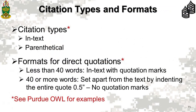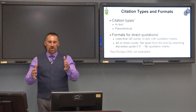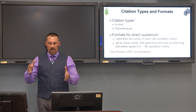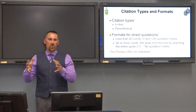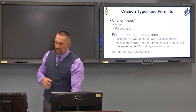Note that there are two types of citations: in-text citations and parenthetical citations. These are often confused with the formats for direct quotes. For direct quotes, there are two different formats. If the quotation is less than 40 words long, you place it in the body of your paper within the sentence with quotation marks around it. If it's 40 or more words, you drop it to its own paragraph, indent the entire quote a half inch from the left margin, and remove the quotation marks — the indentation itself signals that it is a direct quote.